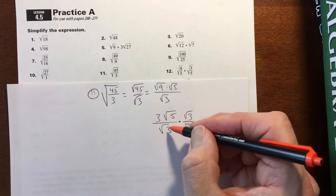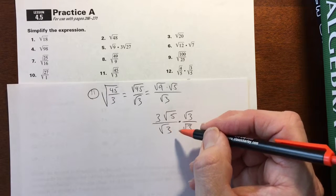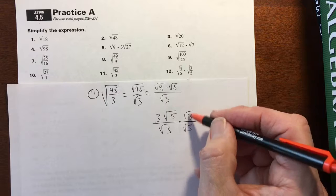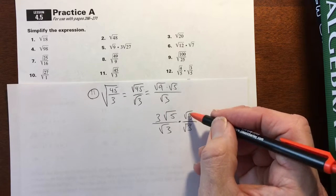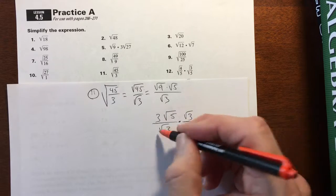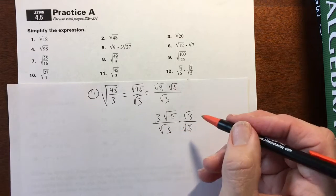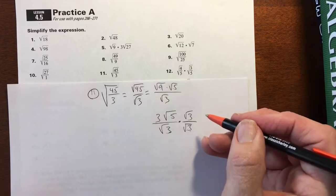Whatever you have here, whether it be a binomial, I'll show you a few of those shortly, or this monomial, multiplying by 1, a fraction of whatever the denominator is over itself, to clear that out. You're creating a perfect square, because 3 times 3 is 9, and square root of 9 is 3. So you're cleaning this up pretty quickly.